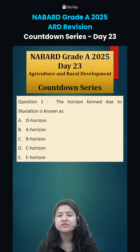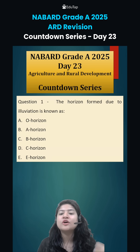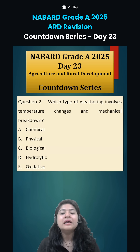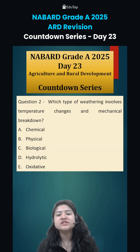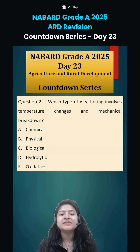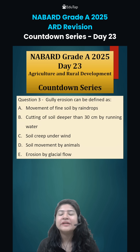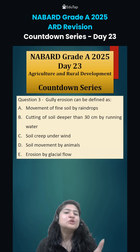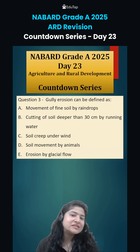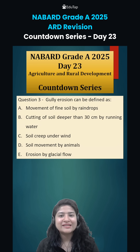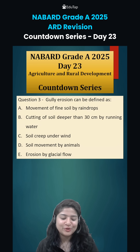Coming to today's questions: first, the horizon formed due to illuviation is known as; second, which type of weathering involves temperature changes and mechanical breakdown; and finally, gully erosion can also be defined as. Comment down your answers and we will discuss in the next class. Thank you.